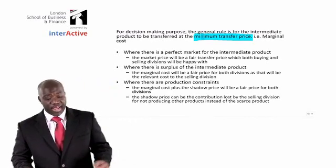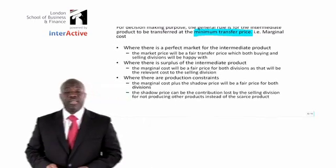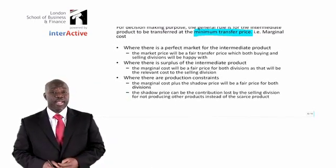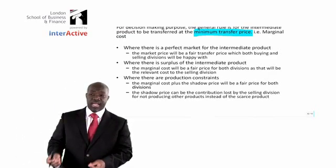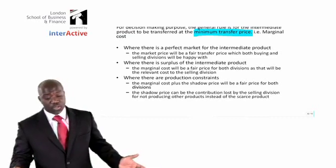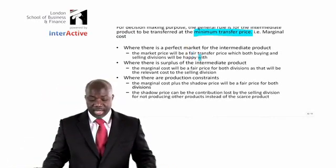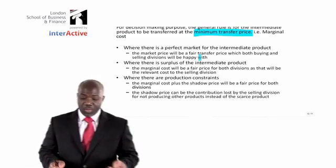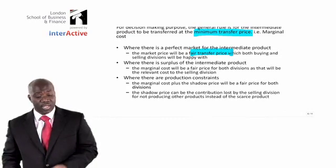In the first scenario, if we have a perfect market for the intermediate product, the best transfer price will be the market price, plus or minus any adjustments. We're saying that the market price will be a fair transfer price for both the buying and the selling division.